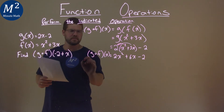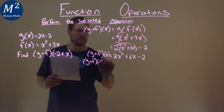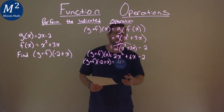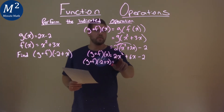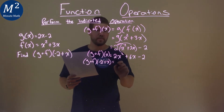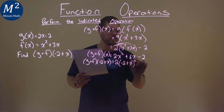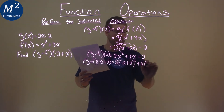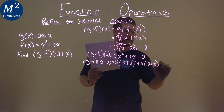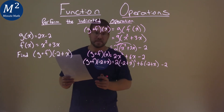But we want to find g of f of negative 2 plus x. So what we're going to do, wherever our x values are, we're going to plug in this negative 2 plus x in there. So we have 2 times a negative 2 plus x, all squared, plus 6 times a negative 2 plus x, instead of that x value. And then minus 2. And now we just simplify.